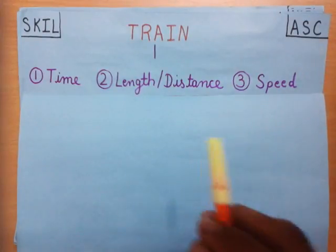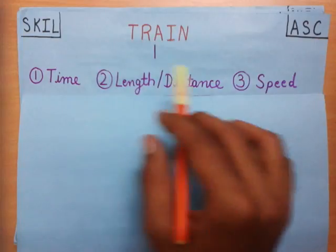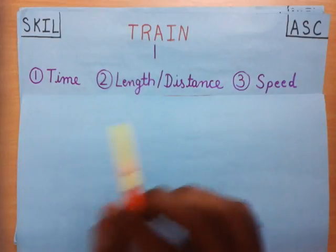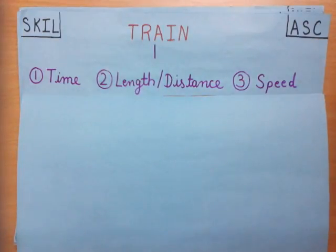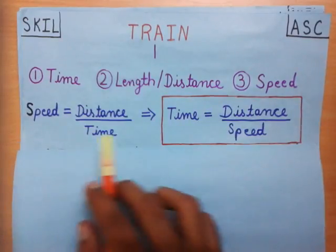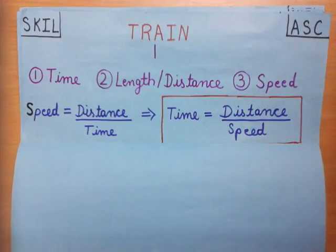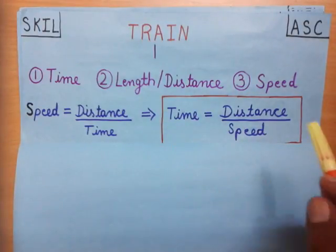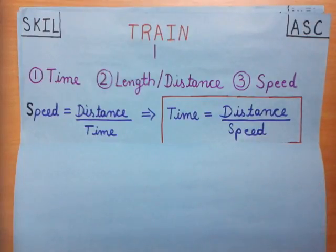Welcome friends, we are going to learn about problems on trains. In problems on trains, we generally have to find quantities like time, length, distance, and speed. The relation between these three quantities is given by the formula: speed = distance / time, which can also be written as time = distance / speed. To understand the concept of problems on trains, we use the form: time = distance / speed.